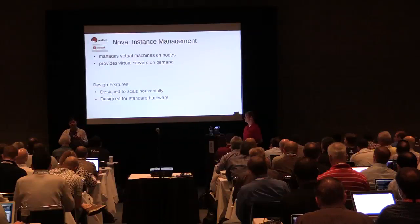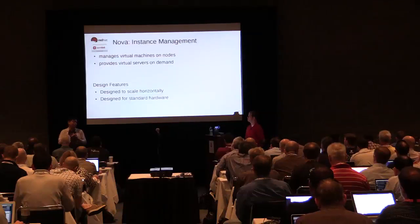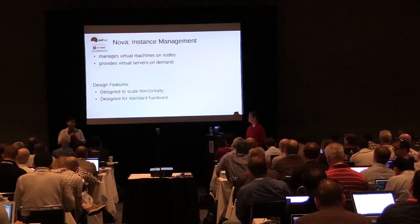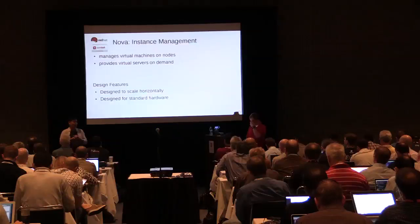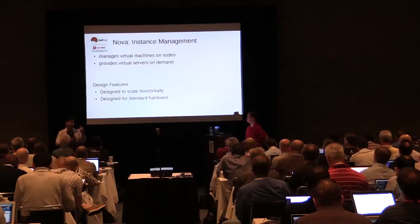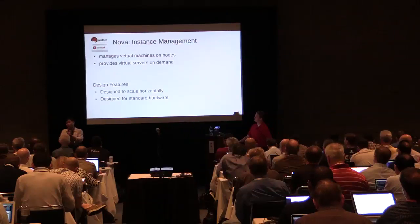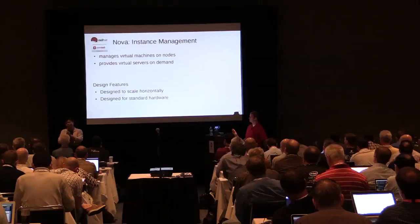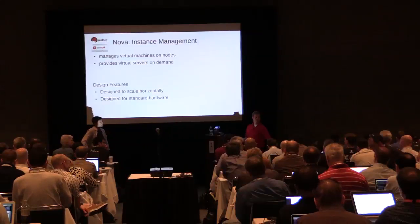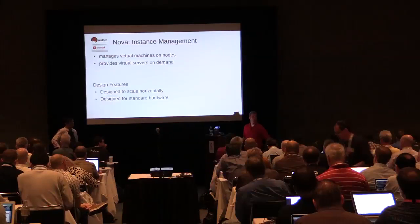You'd also want two network nodes because they act as the gateway for your VMs to reach the outside world — if you lose the one network node, it's essentially the same as your VM being down from the client's perspective. Use case matters: you could go as small as one control node and one or two compute nodes, but for a true production deployment that's our recommendation.